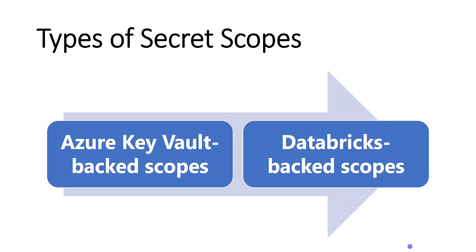Databricks provides two different types of secret scopes. The first one is Azure Key Vault Backed Scopes, which means all the secrets will be maintained within Azure Key Vault. Azure Key Vault is one of the services provided by Azure — similar to Azure Databricks or Azure Data Factory. The purpose of Azure Key Vault is to store secrets securely.